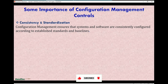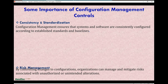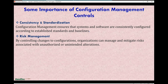Now let's look at some of the importance of configuration management controls. Consistency and standardization: configuration management ensures that systems and software are consistently configured according to established standards and baselines. Risk management: by controlling changes to the configuration, organizations can manage and mitigate risk associated with unauthorized or unintended alterations to the baseline code or software — the underlying baseline of the system. If you don't control it, you're going to have a lot of unauthorized and unintended alterations to your baseline configuration.